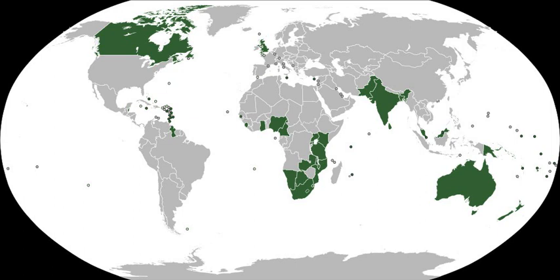The Commonwealth developed from the Imperial Conferences. A specific proposal was presented by Jan Smuts in 1917 when he coined the term 'The British Commonwealth of Nations', and envisioned future constitutional relations at the Paris Peace Conference of 1919. The term first received Imperial statutory recognition in the Anglo-Irish Treaty of 1921, when the term British Commonwealth of Nations was substituted for British Empire in the wording of the oath taken by members of Parliament of the Irish Free State.